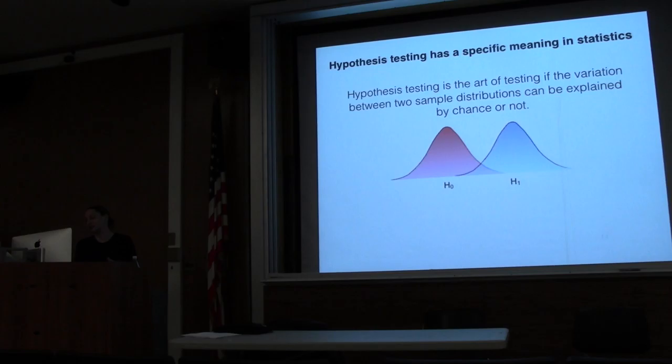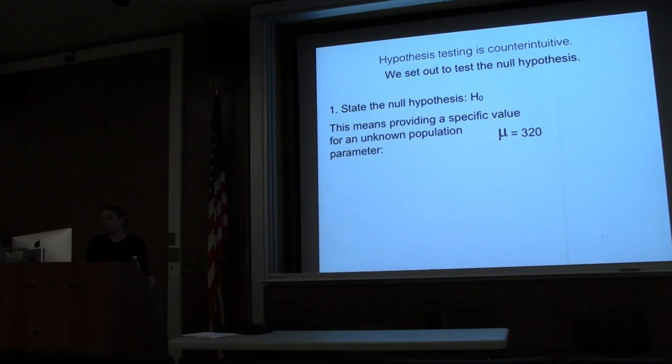Hypothesis testing has a specific meaning. It's about trying to tell whether or not two different distributions are different because of just chance and sampling error, or if there's actually something that's fundamentally different about the two groups of people. You can think about the two groups as one that is subjected to a treatment, and one that's not. How do we start with hypothesis testing?